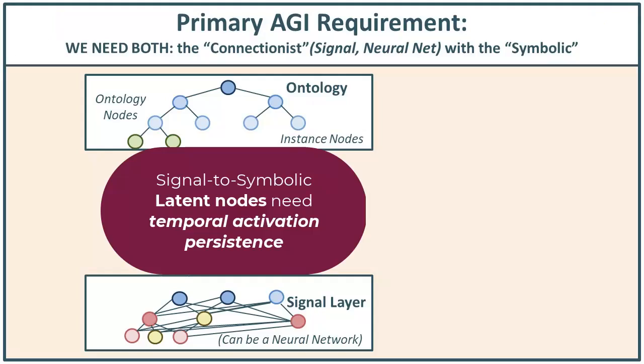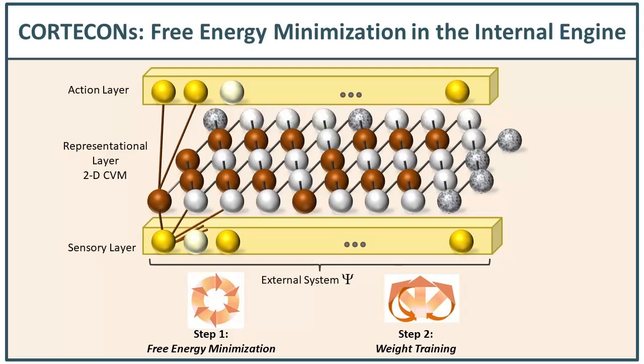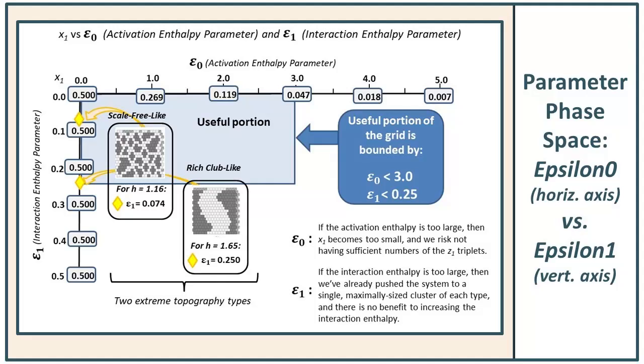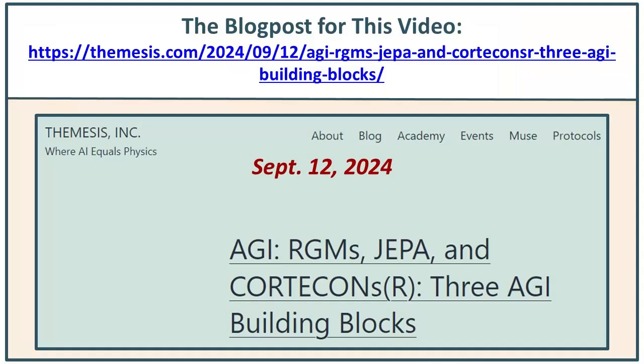In the interest of keeping this short enough to get to you within a reasonable time frame, let's wrap this up. We're introducing a method by which we can create a signal-to-symbolic connection — it involves maintaining persistent activation in the latent nodes. To do this, we're introducing Corticons: content-retentive, temporally connected neural networks, which make use of the cluster variation method from statistical mechanics. There's plenty of starting material: research papers published in journals and on arXiv, starter sets of code, code walkthroughs as prior YouTube videos, and worked examples. We're still talking about how to adjust those control parameters — that's the focus right now — but there's plenty to play with, and the associated blog post will point out a few options.